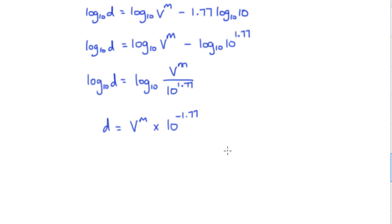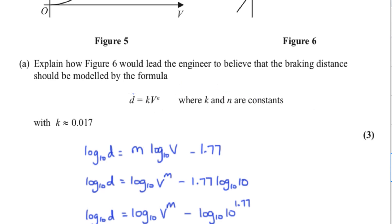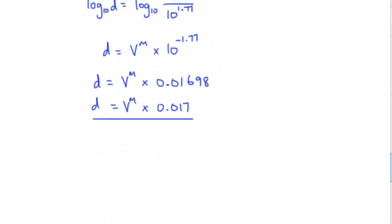10 to the power of negative 1.77 is 0.0169 or 0.017, which is exactly what they had in their function here. They've just got the k at the front, so 0.017.